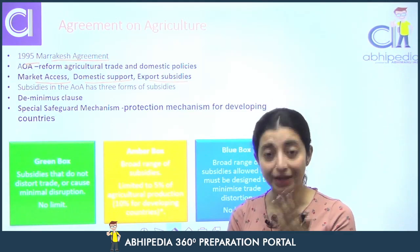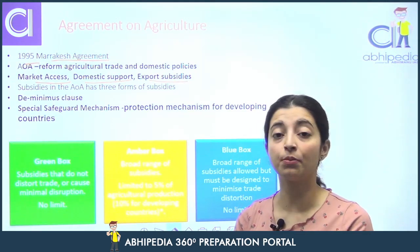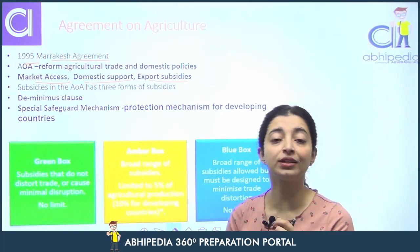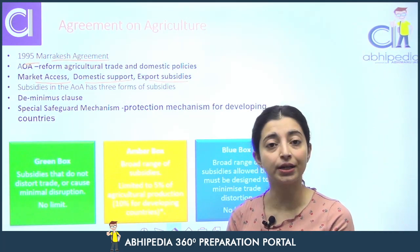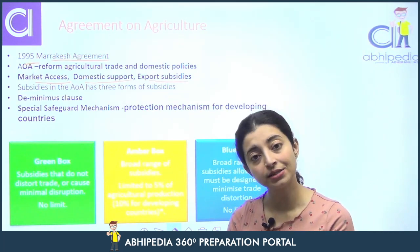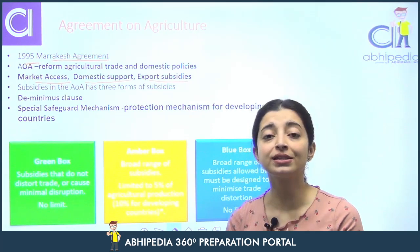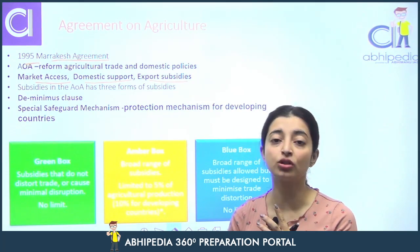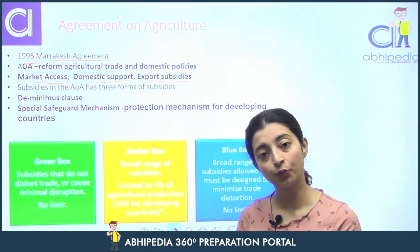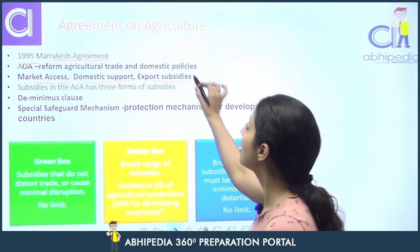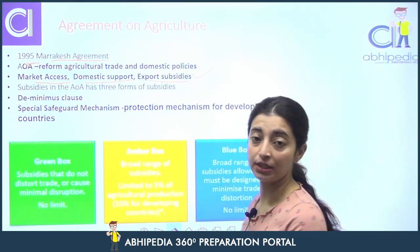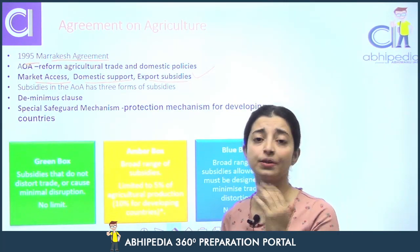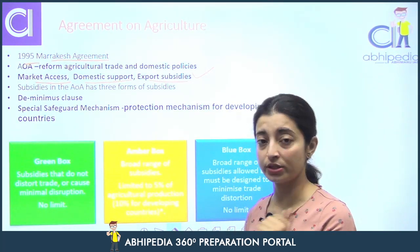Market access talks about ki kisi other nation ke agricultural products ko kitni access deni hai apni markets mein. Domestic support is ki apne farmers ko kitne level tak, kis percentage tak, aap support kar sakte ho. Third is export subsidies — ki hum ne apne agricultural exports ko kitni subsidies deni hai.